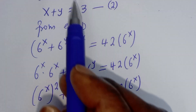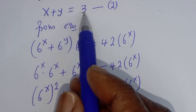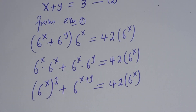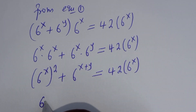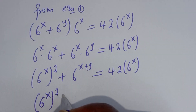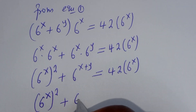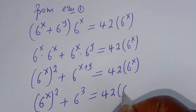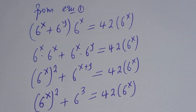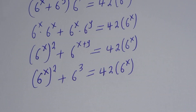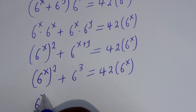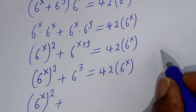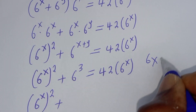Now from equation 2, we know that x plus y is equal to 3. Substituting, we have 6 raised to power s squared plus 6 raised to power 3 is equal to 42 multiplied by 6 raised to power x.